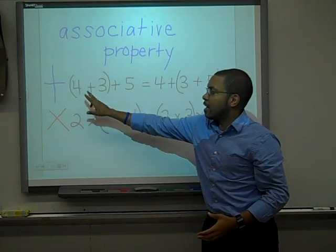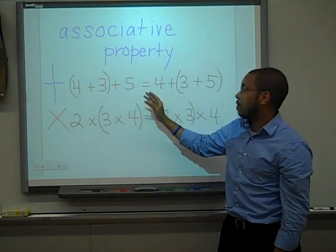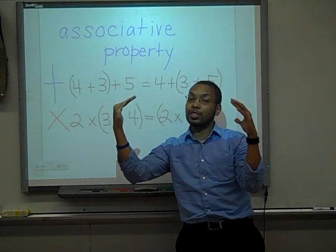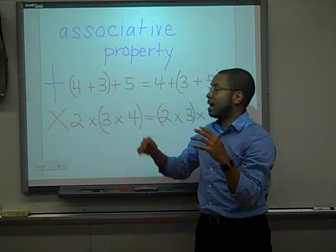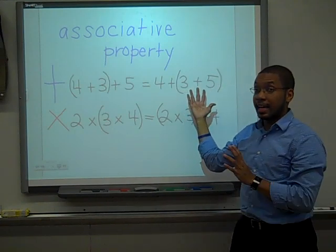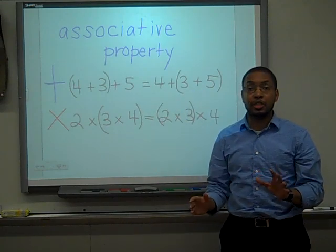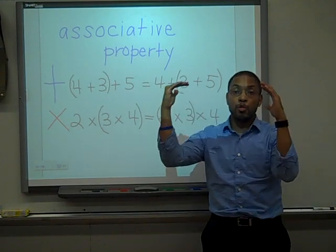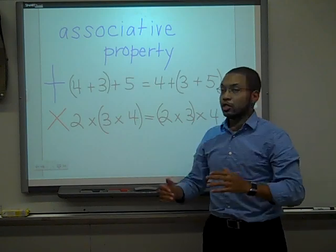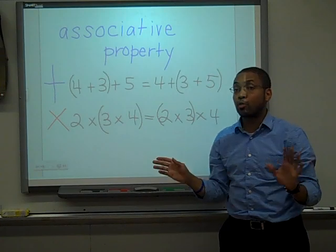Here I'm not changing any order of the numbers. I have 4 plus 3 plus 5. I'm choosing to add 4 plus 3 first, getting 7, and then adding 5 to get 12. Or I can add 3 plus 5 first to get 8, and 8 plus 4 to get 12 as well. Notice how the result did not change, but I did group the numbers differently. The associative property means I can group numbers differently without changing the result.